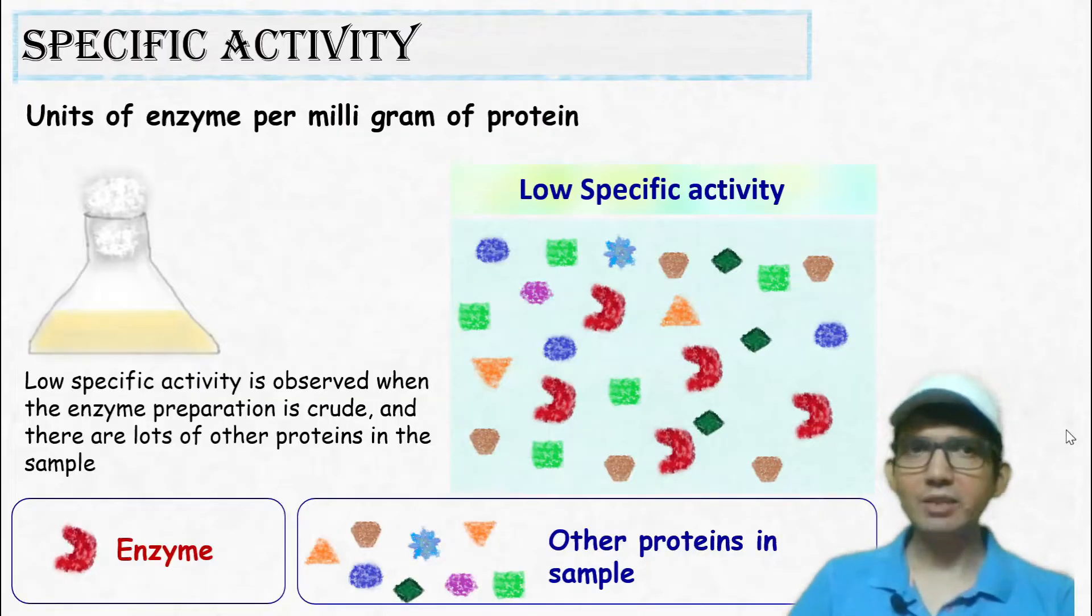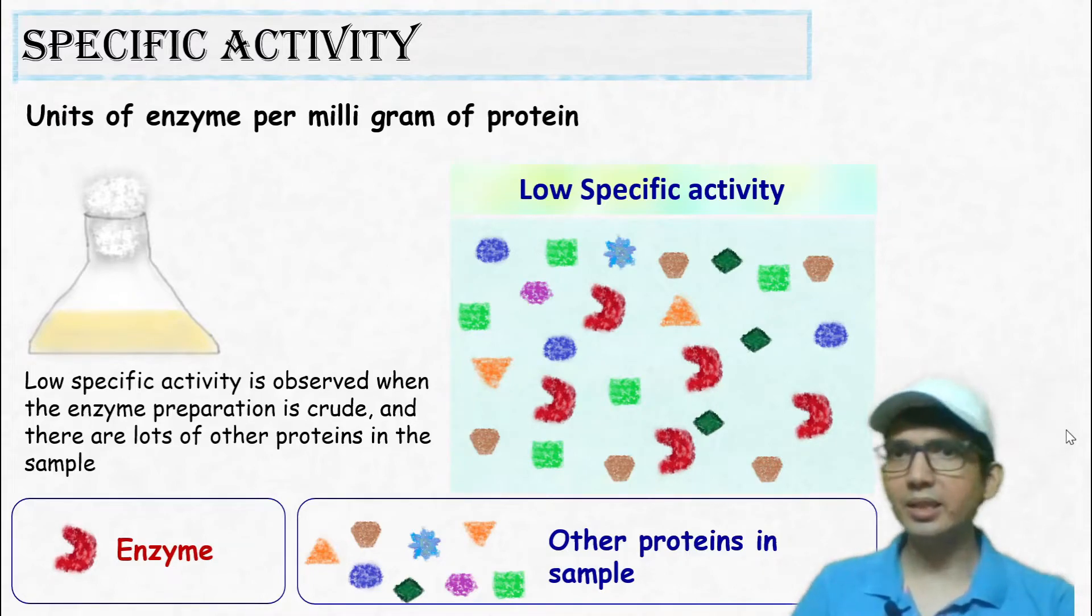Low specific activity is observed when the enzyme is not yet purified, and there are lots of other proteins in the given sample.